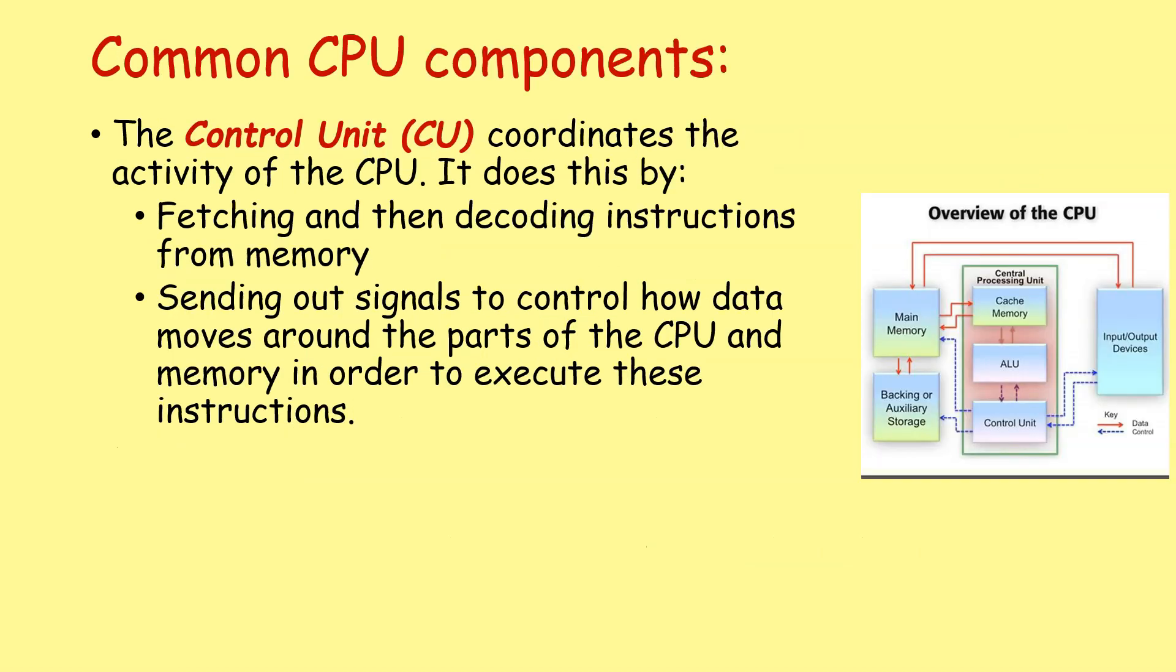So let's look at some of these common CPU components. The first one we're going to look at is the control unit, and the control unit coordinates the activity of the CPU. It does this by fetching and then decoding instructions from memory. It sends out signals to control how data moves around all the different parts of the CPU and memory in order to then execute those instructions. So again, it's controlling this whole fetch, decode, execute cycle. The control unit has quite a lot of functions. This is a very brief summary, but that's basically what you need to know for this course.